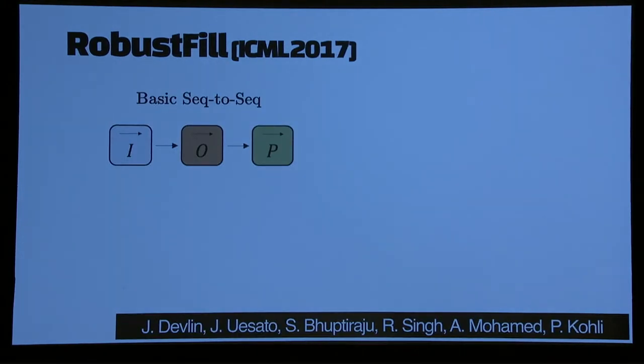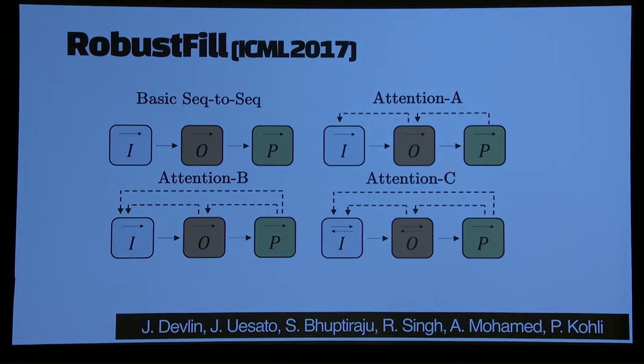Then we took a step back, we said since trees are difficult to train, what if you think of programs as just sequences? You can think of the program and flatten it out into a sequence. The basic architecture might look something like this. You have an LSTM that goes over the input string, which feeds into second LSTM for the output string, for the example, and then the final LSTM is for program decoder. We could add different kinds of attention. The one attention that worked well was the last one, which has double attention. When it's embedding the output string, it attends over input. And when it's producing the program, it attends over both input and output.